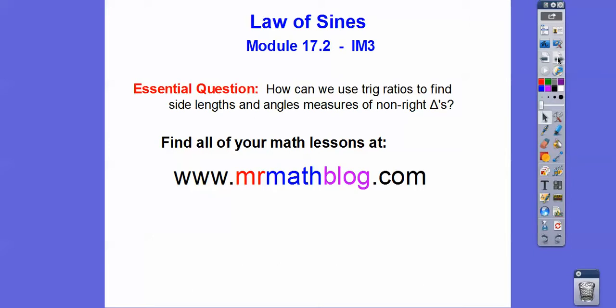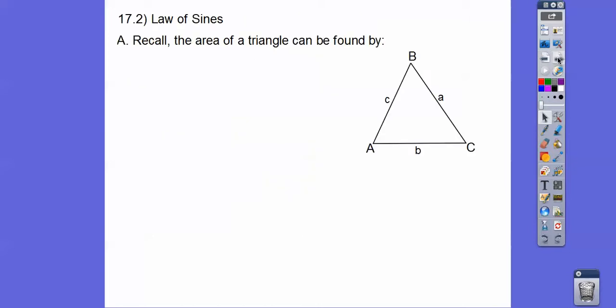So how can we use trig ratios to find the side lengths and angle measures of non-right triangles? Remember from the last lesson, the area of a triangle, depending on which angle you're talking about, if we're talking about angle A, then it's one-half the sine of the sides that are touching angle A. So here it would be B and C.